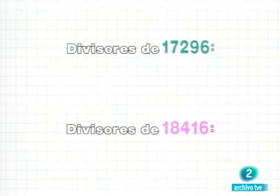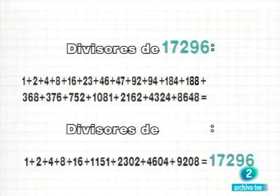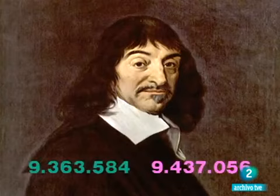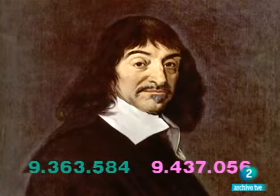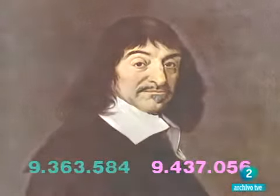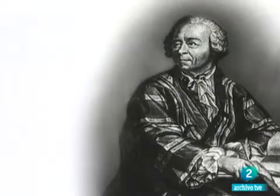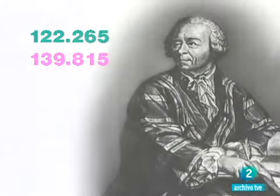Fermat había descubierto en 1636 la segunda pareja de números amigos, 17.296 y 18.416. Su compatriota y rival Descartes, dos años más tarde, descubrió una tercera, nada simple por cierto, 9.363.584 y 9.437.056. Hubo que esperar más de 100 años para que Euler descubriera otra pareja que se le había pasado por alto a Descartes, 122.265 y 139.815. Y además de esta, otras 59 parejas.